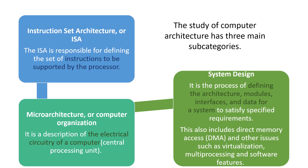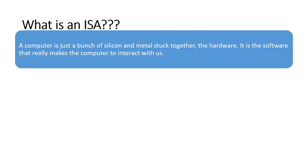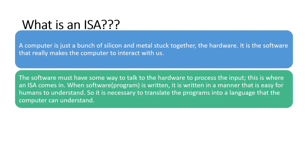In this video, we are only going to see what instruction set architecture is. A computer is just hardware — silicon and metal — and it is software that really makes the computer interact with us. So the software must have some way to talk to the hardware to process the input. This is where instruction set architecture comes in.